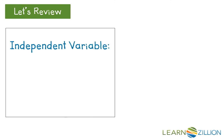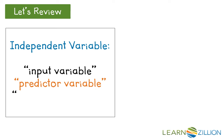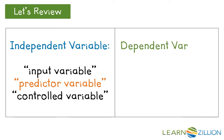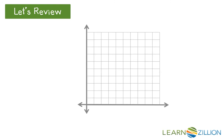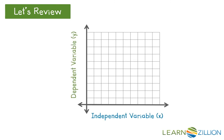The independent variable is often called the input variable. We sometimes call it the predictor variable or the controlled variable. By contrast, the dependent variable depends on the independent variable — we call it the output variable or the response variable. On a graph, the independent variable is along the x-axis and the dependent variable is along the y-axis.